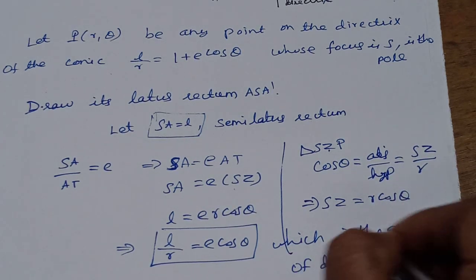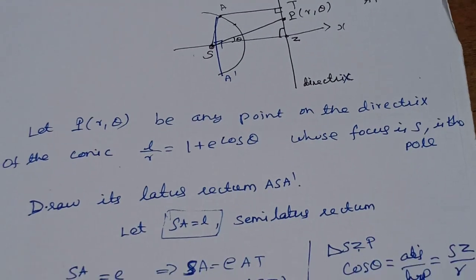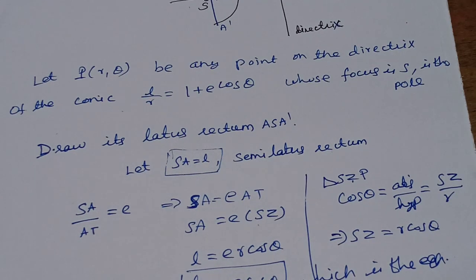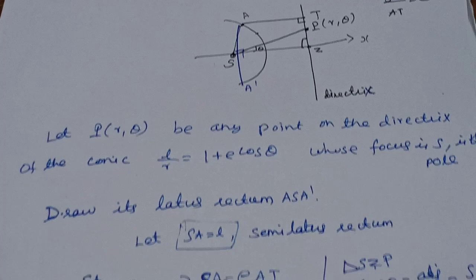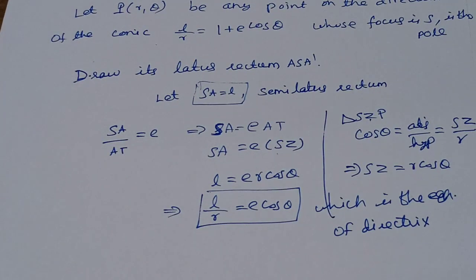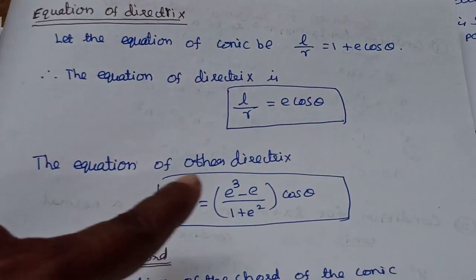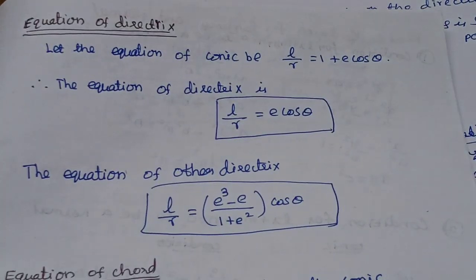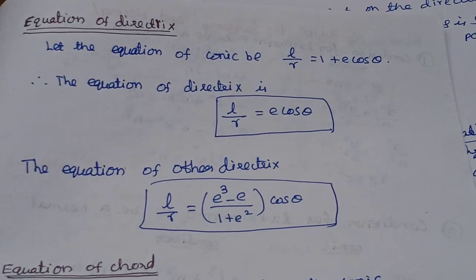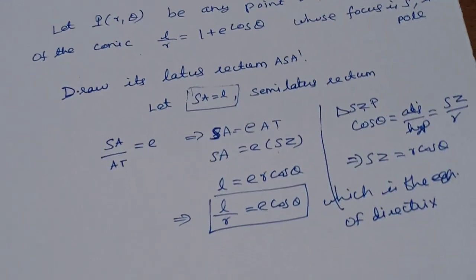This is the equation of directrices. So these are five-mark questions. I will tell you about this — there are two equations of directrices. One equation of the directrix gives L by R equals E cos theta. The other equation of the directrix is L by R equals E cubed minus E divided by 1 plus E squared, times cos theta. We will find out this new equation. Take care.